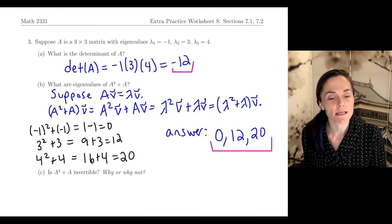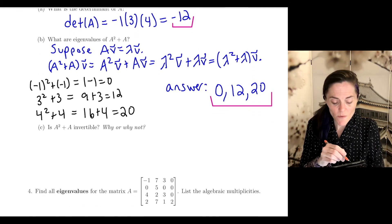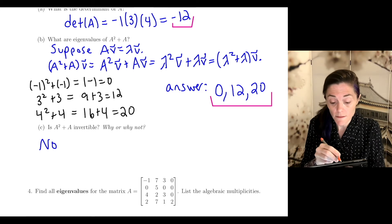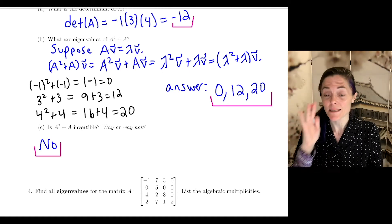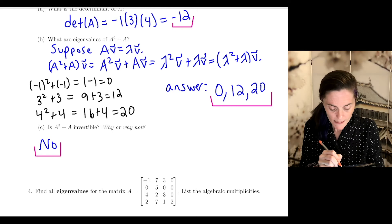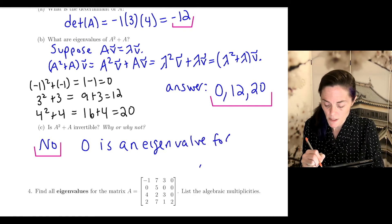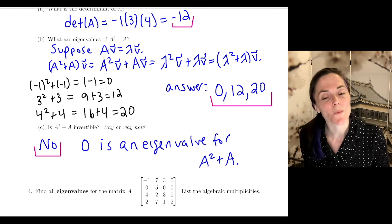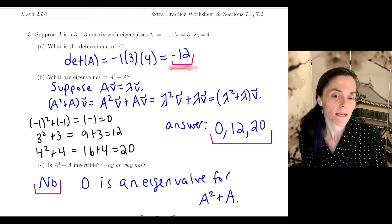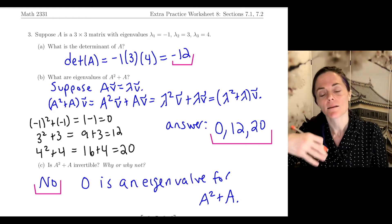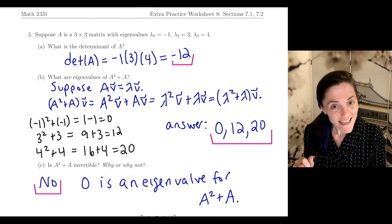Part C says is A² + A invertible? The answer is no, because we found all the eigenvalues. A matrix is invertible if and only if 0 is not an eigenvalue. Here we have a 3 by 3 matrix where 0 is an eigenvalue for A² + A, and this is why this matrix is not invertible. Just as a remark, it's not asked, but it's good to observe: A is invertible because the determinant is negative 12, or you could say 0 is not an eigenvalue for A.